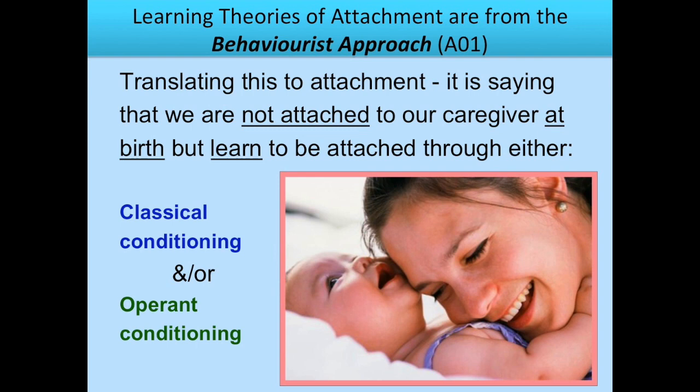When we translate the learning theory to attachment, it's saying that we are not attached to our caregiver at birth, but we learn to be attached through either classical and/or operant conditioning. It's saying that when you're born, there is no bond between mother and baby — absolutely nothing there for the baby in order to attach to the mother. The only way the baby can attach is to learn to attach through classical and operant conditioning.